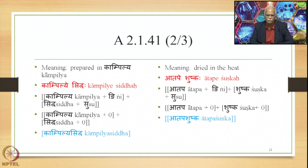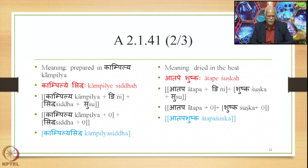Another example means 'dried in the heat.' The Laukika Vigraha is Atape Shushkaha. The Alaukika Vigraha is Atapa plus Nghi plus Shushka plus Su. After Samasa and Pratipadika are formed, Supodhatup Pratipadika Yoho applies and we have Atapa plus 0 plus Shushka plus 0. Joining the words together, we get the form Atapa Shushka as the finally derived compound output.